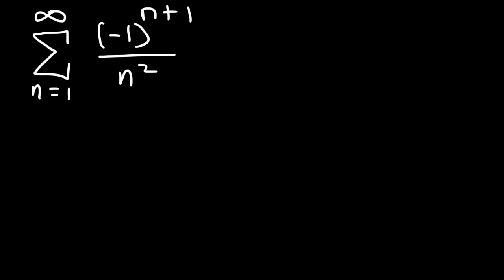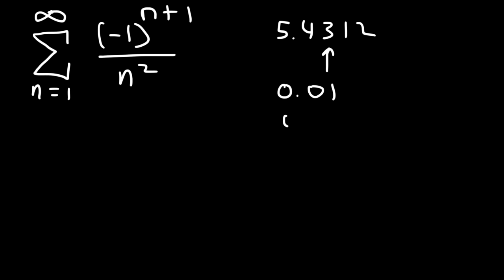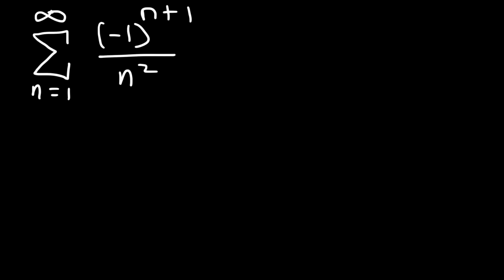Now that we've established that, we can go ahead and approximate the sum. We want it correct to two decimal places. So let's say if the answer was 5.4312, we need this digit to be correct. Therefore, just to be on the safe side, you don't want to set your remainder equal to 0.01 — rather, you want to set it equal to 0.001. You want the third decimal place to be the uncertain digit, but the second to be certain. In order to approximate the sum to two decimal places, the first thing we need to do is determine how many terms we need, and once we have that, we can add up those terms.